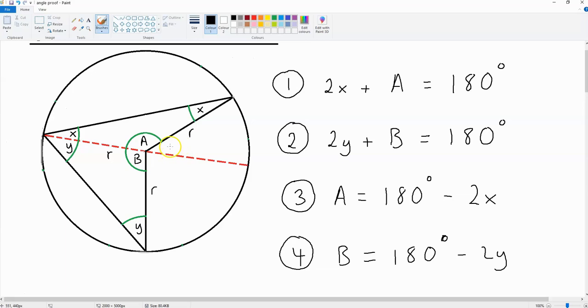What we can do is call this angle, over here, c. And we can call this angle, over here, d. We are going to look for the value of c plus d, and we are going to try to prove that it's double x plus y.